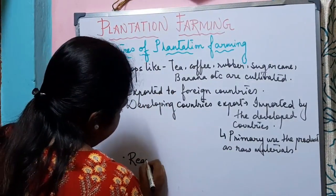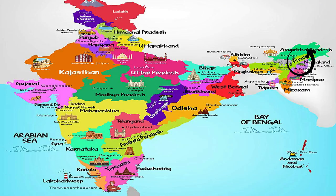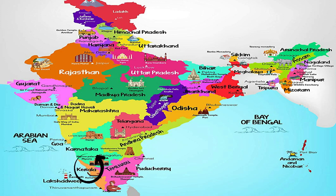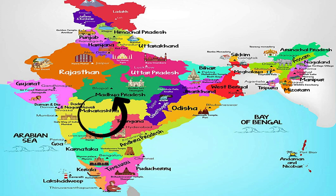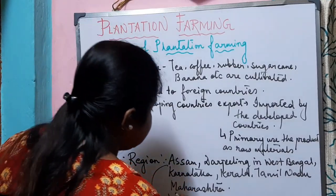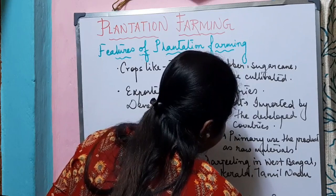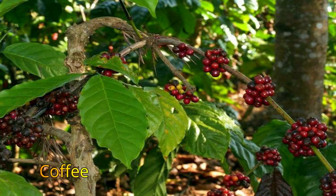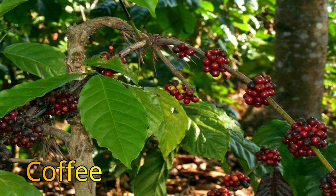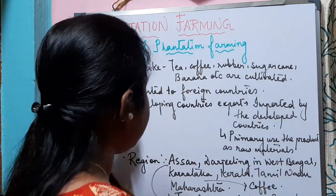Now let us know where plantation farming is practiced in India. The regions include Assam and Darjeeling in West Bengal — which are very famous for tea — and Karnataka, Kerala, Tamil Nadu, and Maharashtra. The tea of Darjeeling in West Bengal is very famous, and so is the coffee of Karnataka.